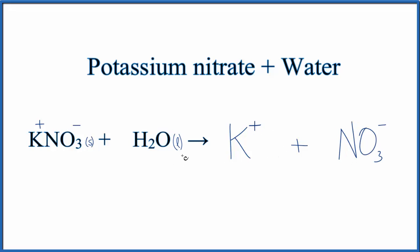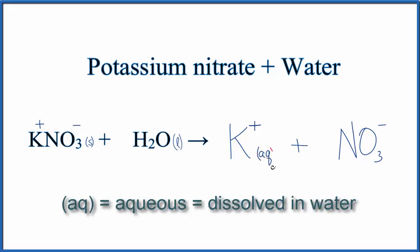Because these ions are dissolved in water, and we put the KNO3 in the water and it dissolves, we can write AQ after each one, and that means aqueous. Aqueous tells us that they're dissolved in water.